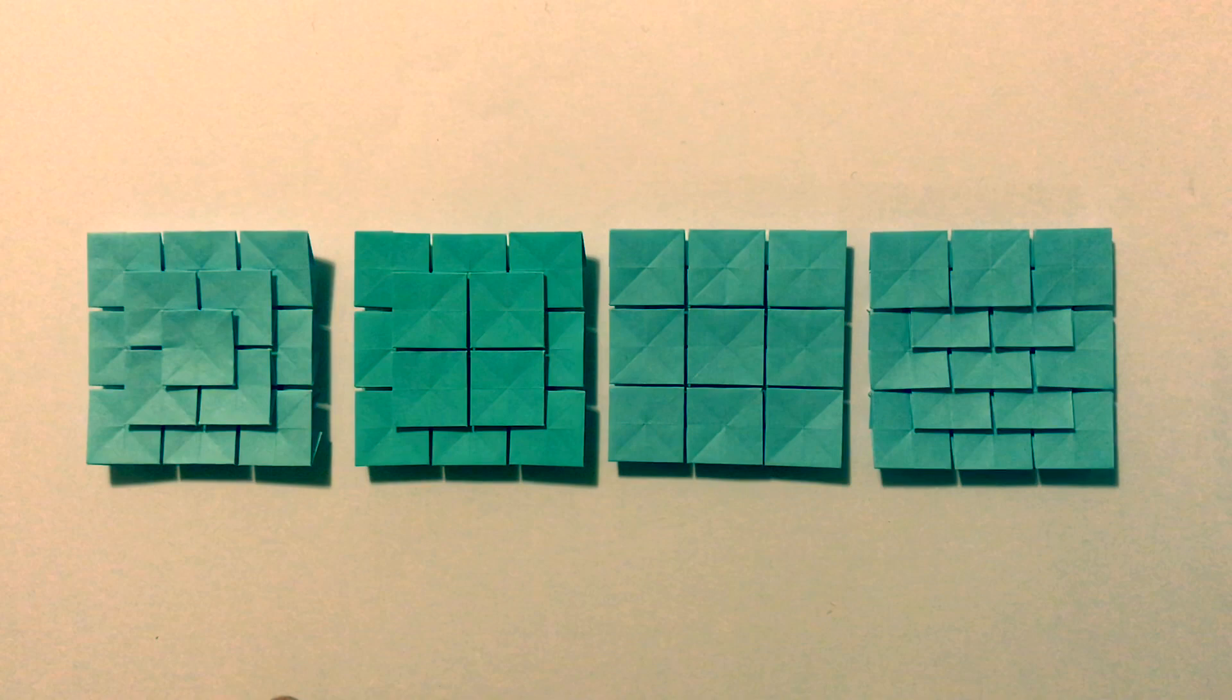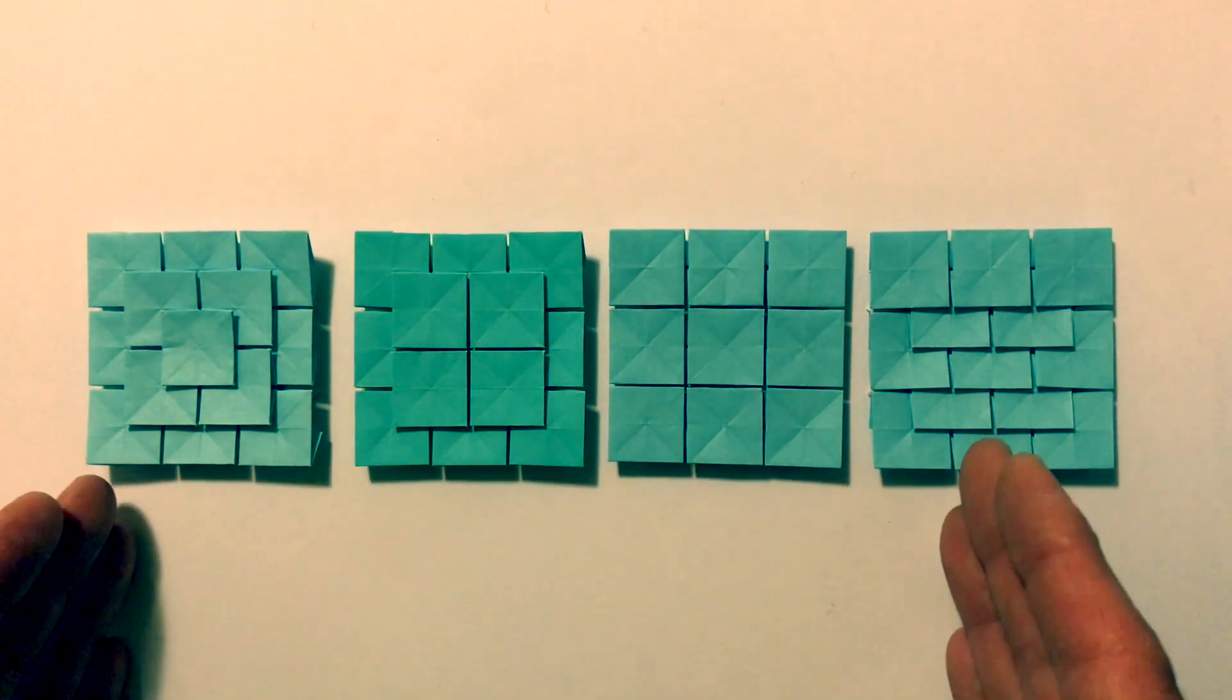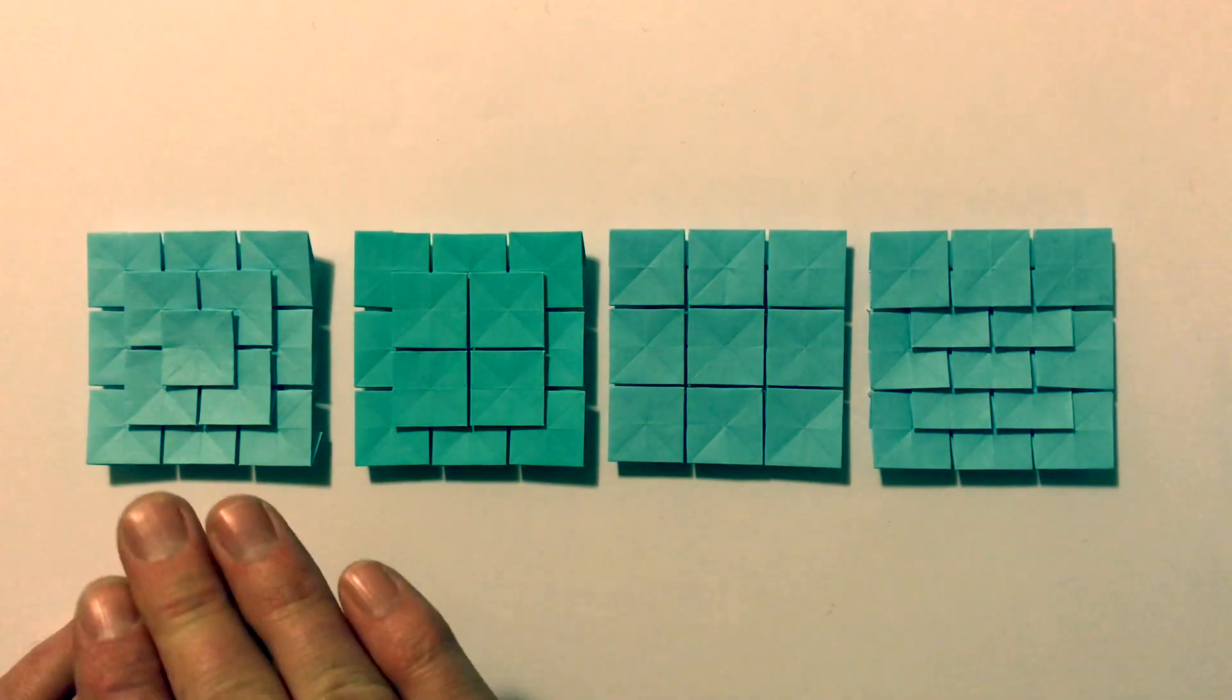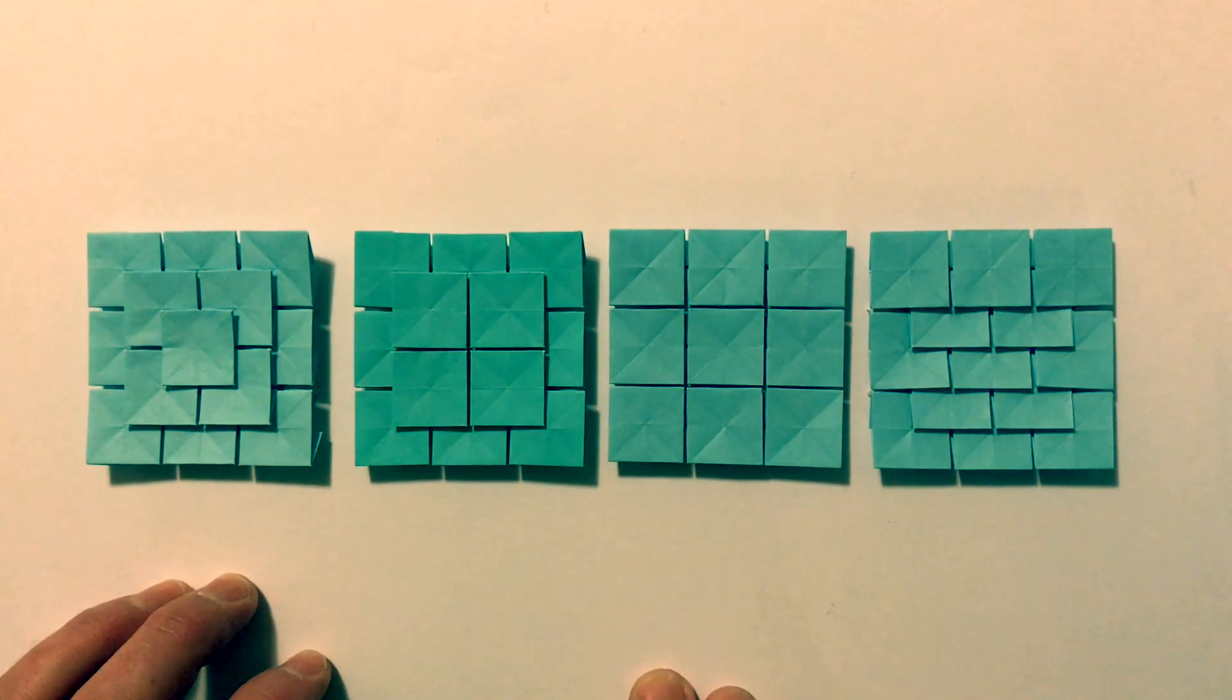So as per previous video, I showed you these four here. These are exactly the same 3x3 clover tiling just with the tiles ordered in different ways.